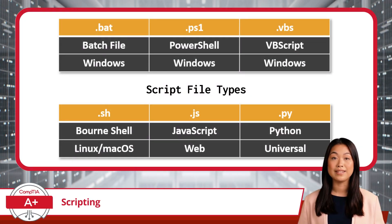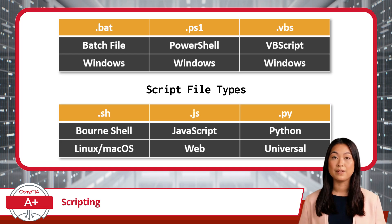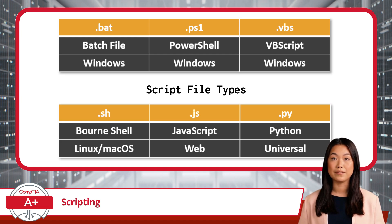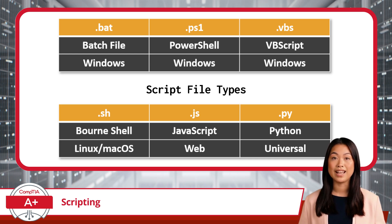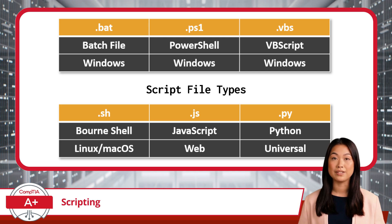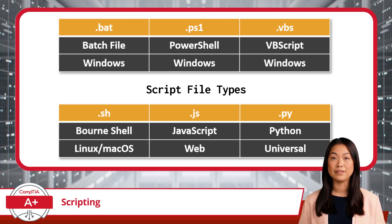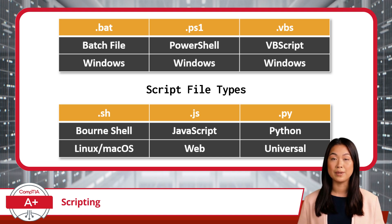Scripts come in many shapes and sizes, tailored to different operating systems and environments. Windows users will recognize .bat files, perfect for simple command line tasks, or .ps1 files, a PowerShell favorite for managing configurations and gathering data. If you've worked with older systems, you might have encountered .vbs files, though their popularity has decreased over time. On the Linux and macOS side, .sh files are the heroes of automation, handling everything from permissions to updates. For web-based tasks, there's .js, the file extension for JavaScript. And for versatility, .py files bring Python into the mix, capable of everything from automation to data analysis. Each file type has its own strengths, making scripting languages truly adaptable.